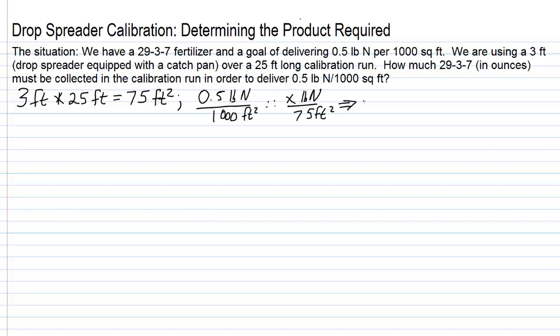We cross multiply, divide, and solve for x, so we have 75 times 0.5 equals 1,000 times x. Do our multiplication, and 75 times 0.5 equals 37.5 equals 1,000 times x.